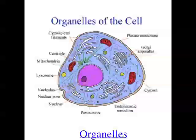Another organelle is called a lysosome, which does a digestive job in the cell — it breaks down waste and any unwanted cellular material. The last organelle I'll talk about is a vacuole. Vacuoles are found in plant and animal cells, but in plant cells they're often really big, contain sap, and can provide structural support for the plant cell.